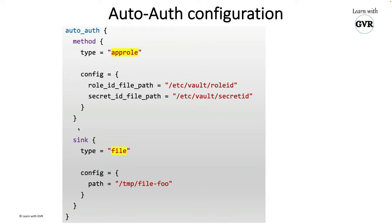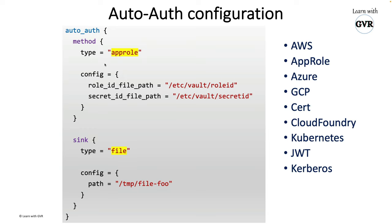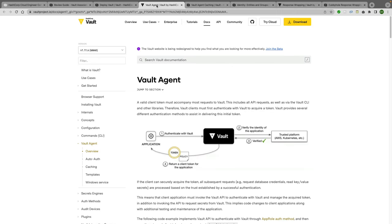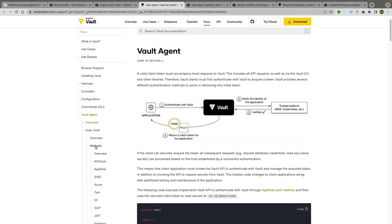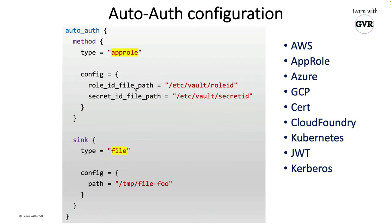From the auto_auth configuration file perspective, it's written in HCL language. For example: auto_auth method type equal to app_role. Automatic authentication supports various types including AWS, App Role, Azure, GCP, Cloud Foundry, Cert, and Kubernetes JWT. All this information is available in the documentation at vaultproject.io under Vault Agent, automatic authentication, then click on Method.